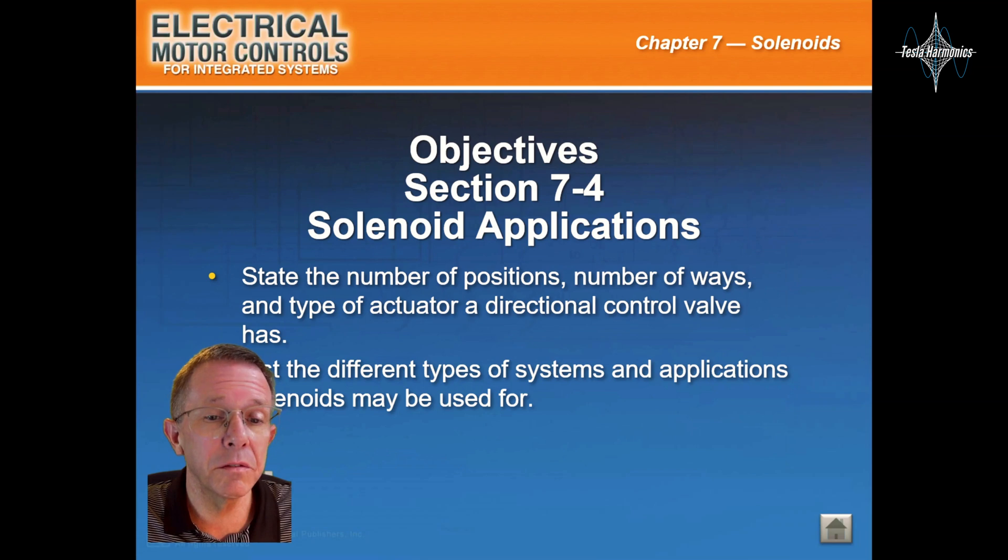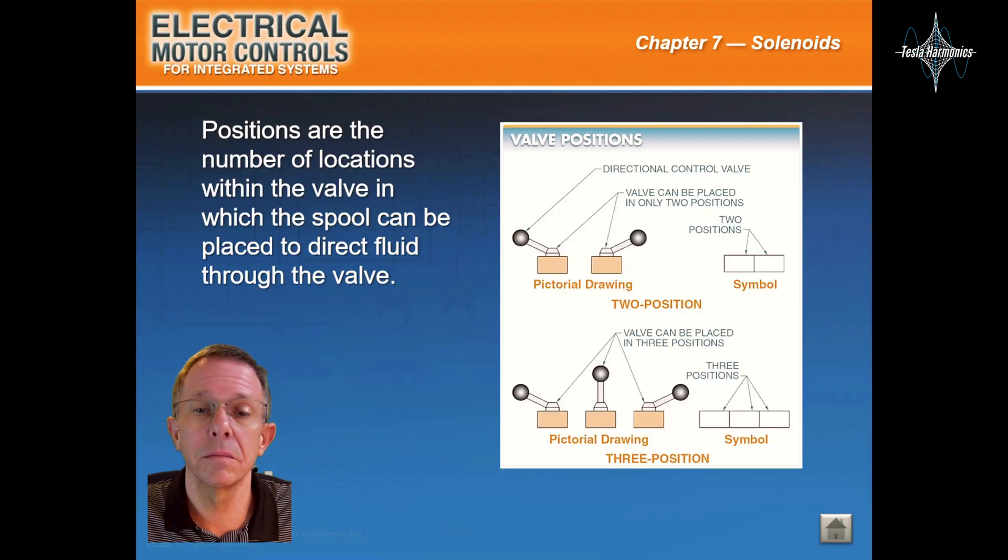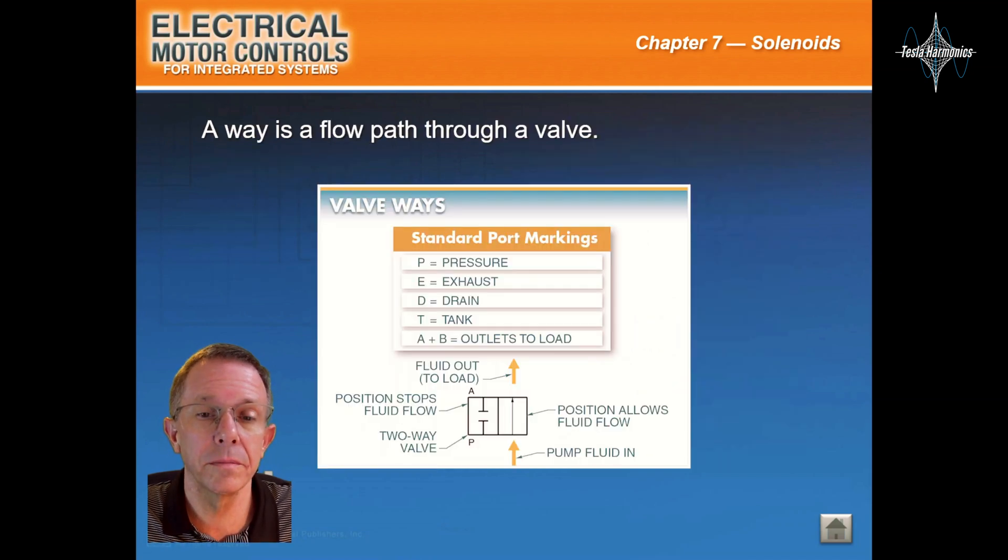This will be section 7-4 solenoid applications. Positions are the number of locations within the valve in which the spool can be placed to direct fluid through the valve. A way is a flow path through a valve.